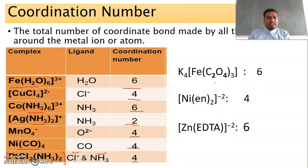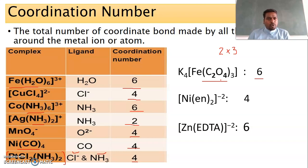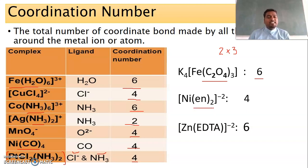Now let us see polydentate ligands. Take tris(oxalato)ferrate(III) — the iron(III) complex with three oxalate ions. Each oxalate can form two bonds, and there are three oxalate ions, so the coordination number is six (3 × 2 = 6). If there are three bidentate ligands, you multiply by two because a bidentate ligand forms two bonds. For tridentate ligands, multiply the number of ligands by three. Similarly, ethane-1,2-diamine (en) is a bidentate ligand forming two bonds. With two en ligands present, the coordination number is four (2 × 2 = 4).